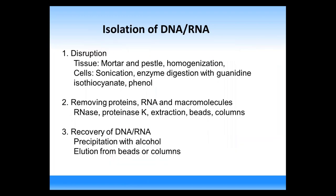Working with DNA and RNA involves three basic processes: disruption, removal of unwanted species, and recovery. Disruption in tissue can be done manually with mortar and pestle homogenization; in cells, by sonication or enzyme digestion with guanidinium thiocyanate and phenol. Removing proteins can be done with proteinase K. RNA can be removed with RNases if you're interested in DNA. Recovery typically involves precipitation with alcohol, or elution from beads or columns.